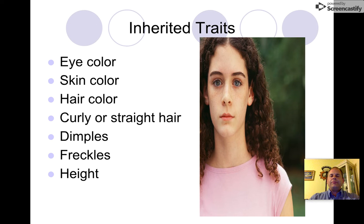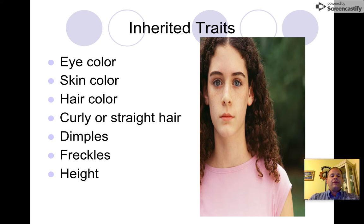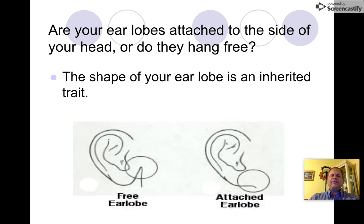Now take a look at this person in the picture. Notice her eye color, skin color, and hair color. Is her hair curly or straight? Does she have dimples, freckles, a cleft chin, or a widow's peak? Can you tell how tall she is? These are things you get from your parents that you cannot change about yourself.